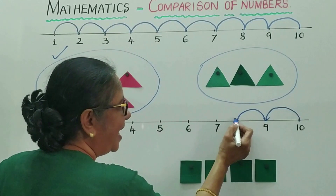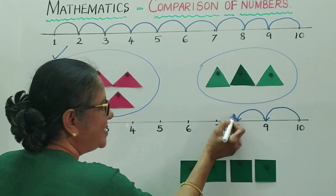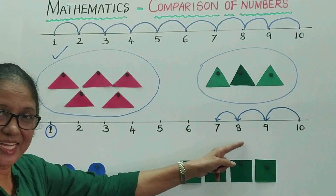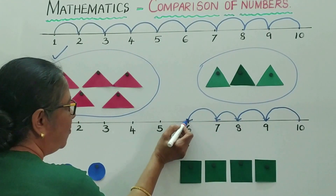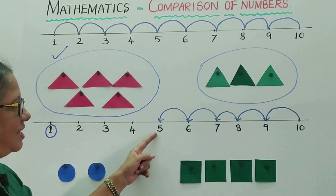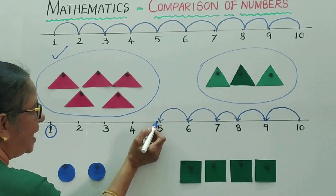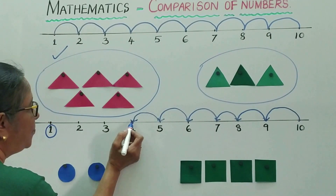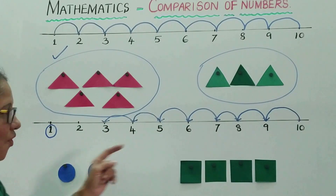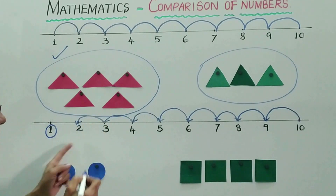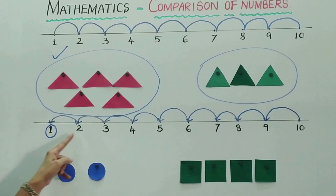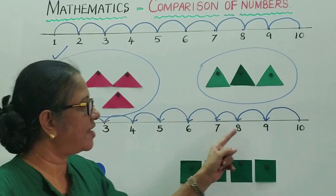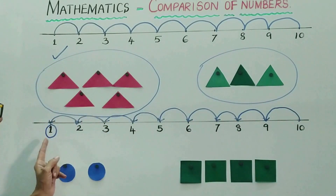8 is less than 9, and 7 is still lesser than 8. 6 is of course lesser than all those numbers. 5 is less than 6, 4 is less than 5, 3 is less than 4, and 2 is less than 3. Number 1 is least — lesser than all these numbers: 2, 3, 4, 5, 6, 7, 8, 9, 10.